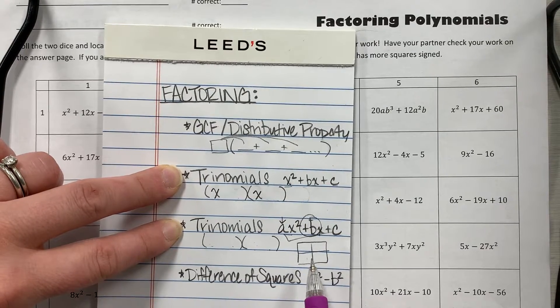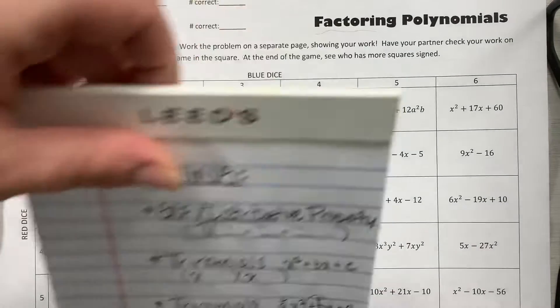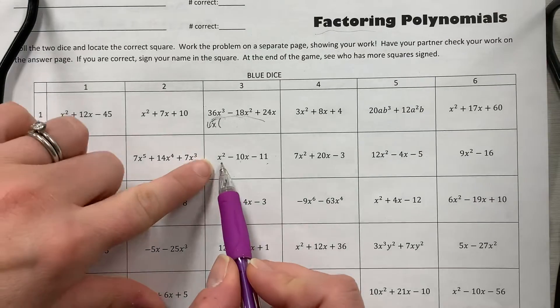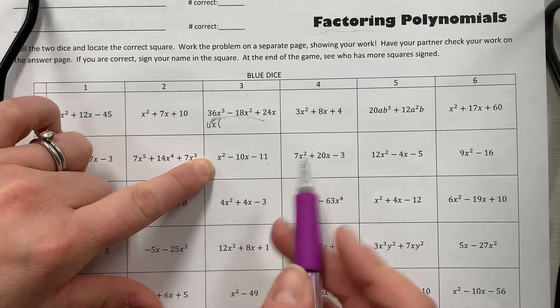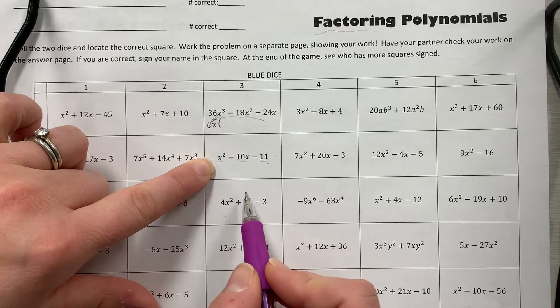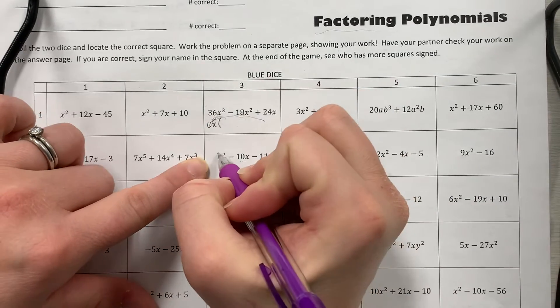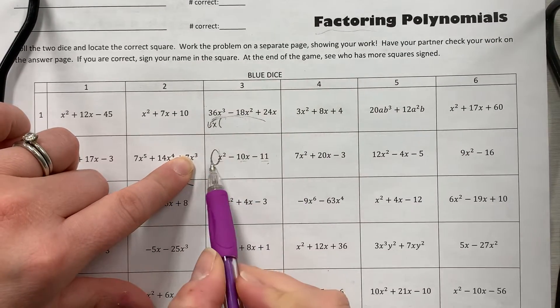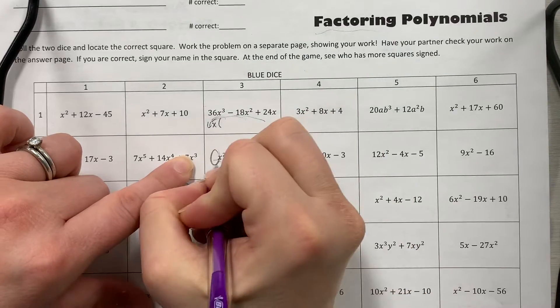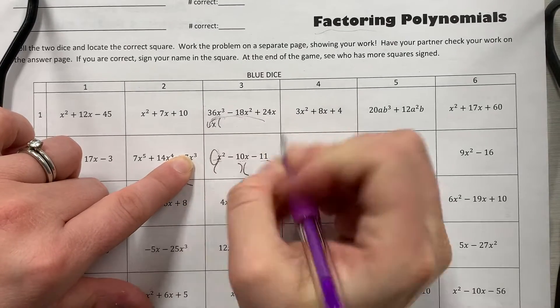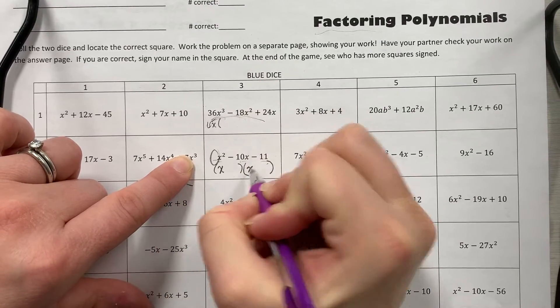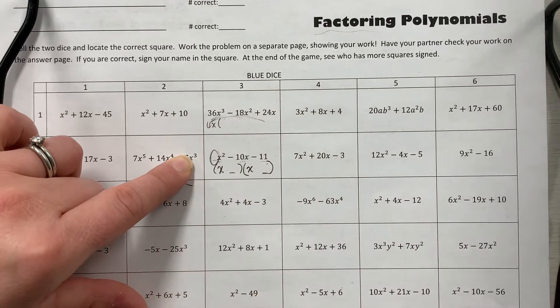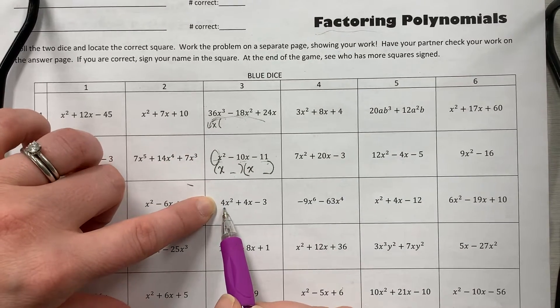When you look at a trinomial like this one, we said, well, it doesn't have a greatest common factor. It has three pieces, that means it's a trinomial. The fact that there's not a number in front of that x squared, I can skip straight to just saying, oh, so my binomials are x and x and I just have to figure out what numbers need to go with the back.